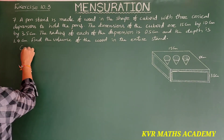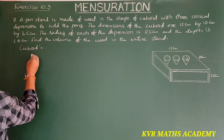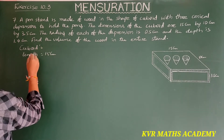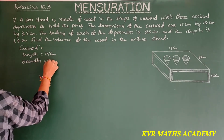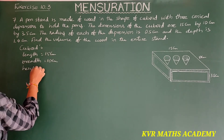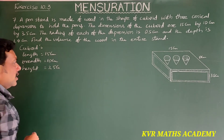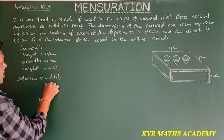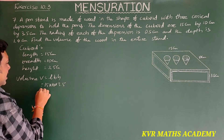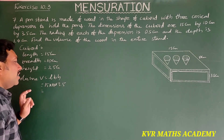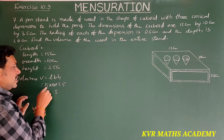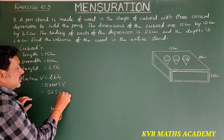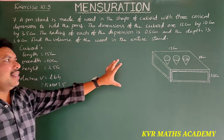For the cuboid: length equals 15 centimeters, breadth equals 10 centimeters, height equals 3.5 centimeters. Volume equals l times b times h, that is 15 into 10 into 3.5. Ten into 3.5 is 35, and 35 into 15 equals 525 centimeters cubed. This is the volume of the cuboid stand.